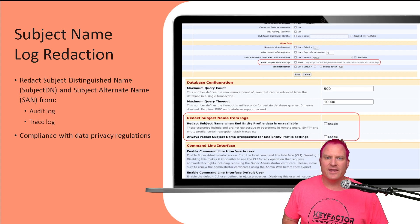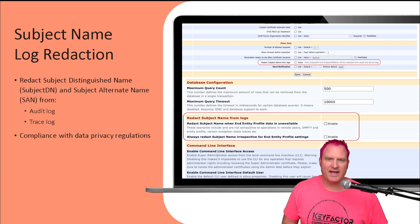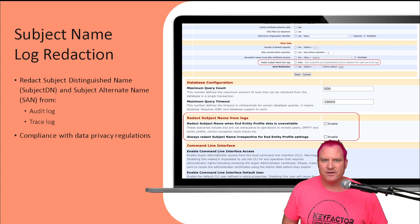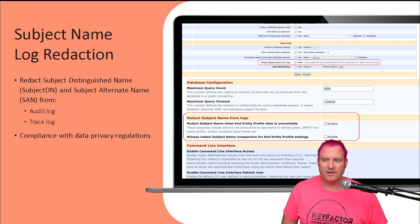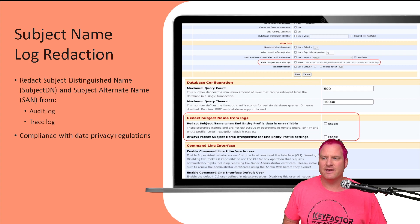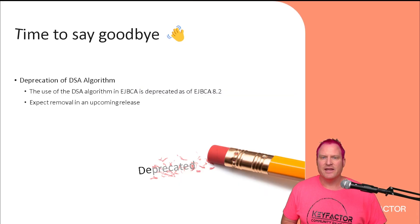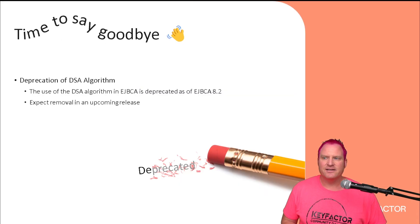Another one we gave to the community was subject name log redaction. This gives you the ability to remove the subject DN or the subject alternative name from any of your logging. That way, for GDPR compliance or any data privacy regulations you operate your PKI under, you can now take advantage of that with EJBCA Community.